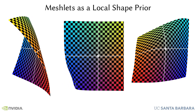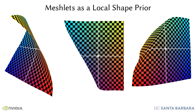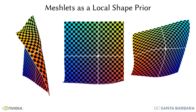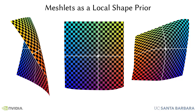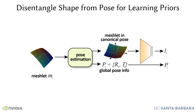Instead of learning priors at the object level, we propose to learn them locally. We introduce meshlets: small patches of mesh that capture local features like corners or edges. Although meshlets learn priors locally, different poses may make training inefficient. To disentangle the pose from the shape of our meshlets, we learn them in a canonical pose.